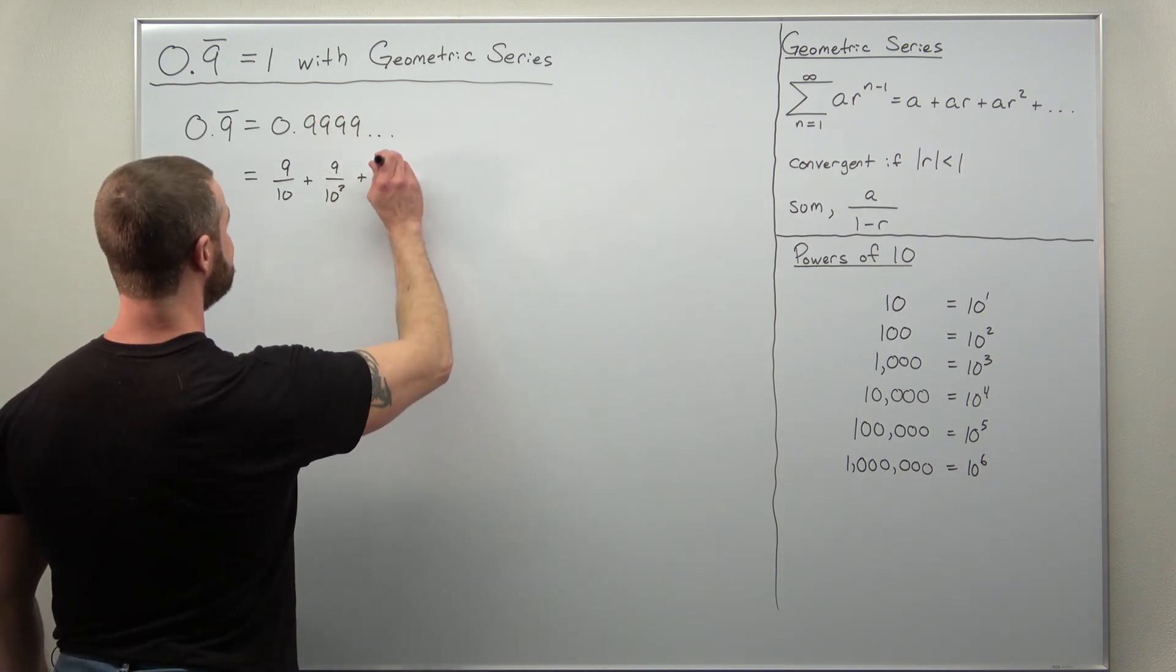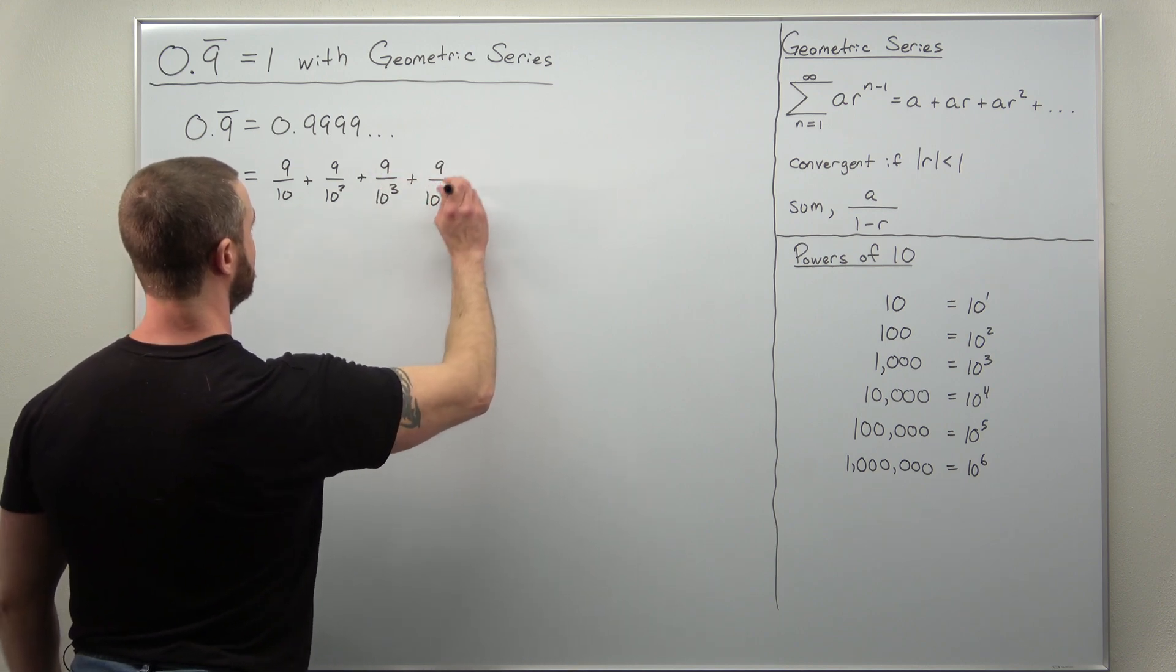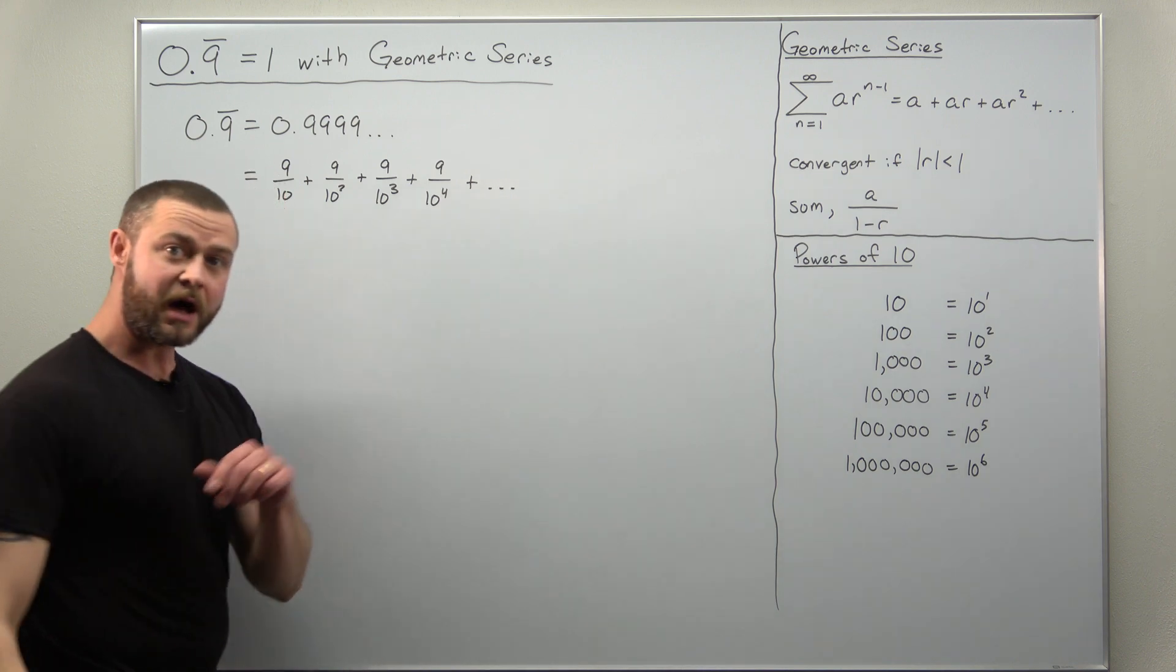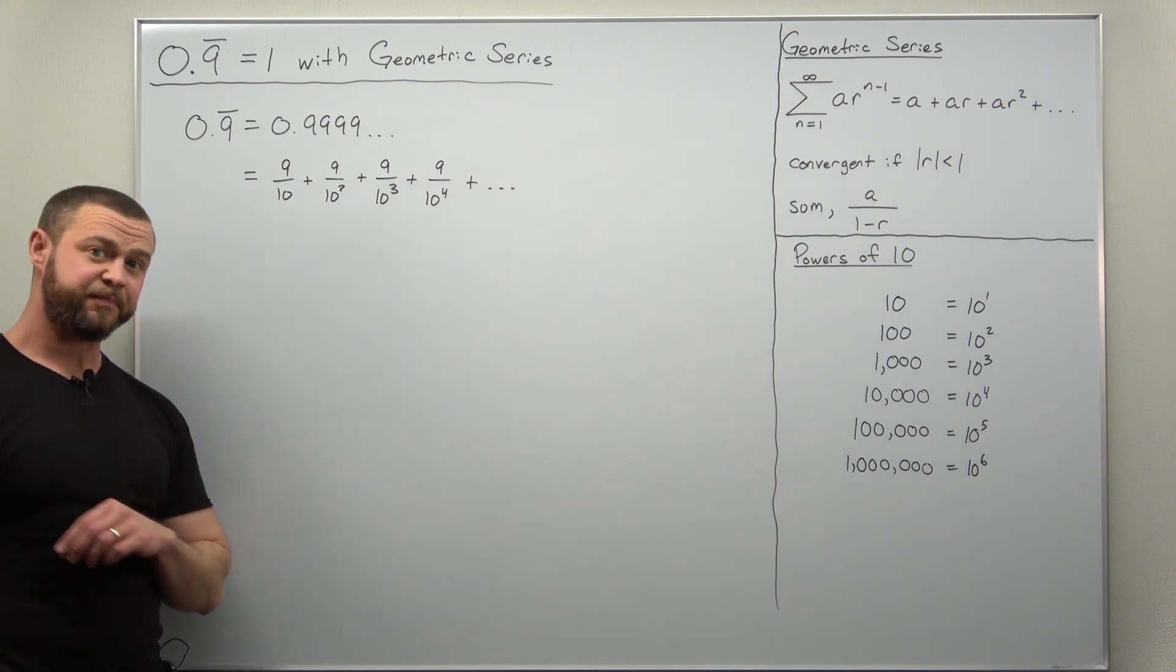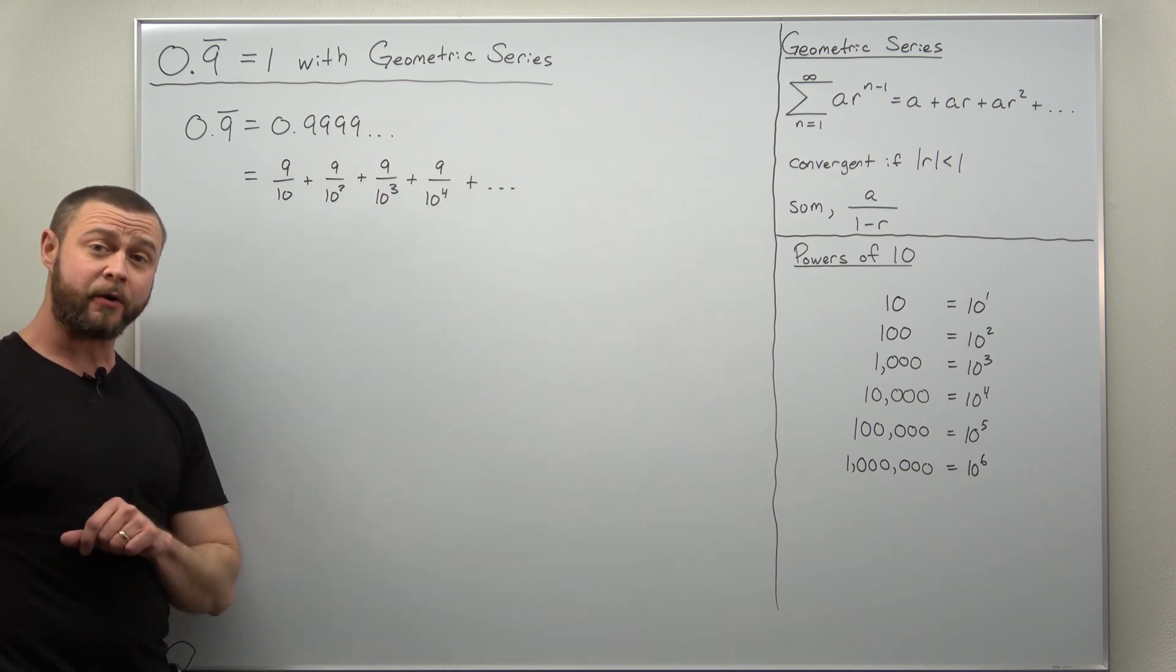9 in the one thousandths place, and then 9 in the ten thousandths place. And you can keep going with that. Basically each term there will come out to be 9 over a power of 10.